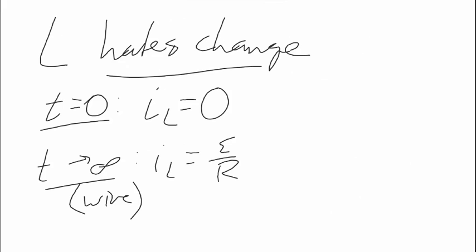For problem number seven, we're dealing only with the limits — either right when we close the switch or some long time later. When you close switch S and ask what the two different currents are: right when I close my switch, the inductor is not going to let anything flow through it. So the current through the inductor and resistor R3 in series with it is zero. I1 and I2 are going to be the same — we treat the circuit as if it's just R1 and R2 connected in series to the battery, because the branch with the inductor doesn't exist right when we close the switch. After a very long time, the inductor just becomes a wire, and we then have a circuit with R1, R2, and R3. We just do the loop rules with V = IR to find the currents.